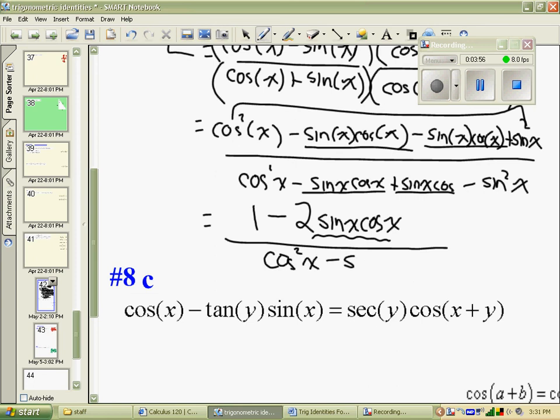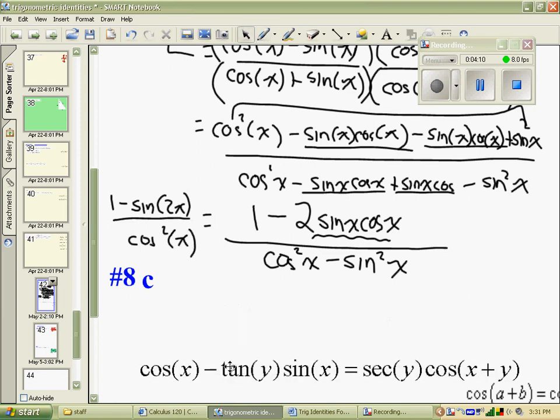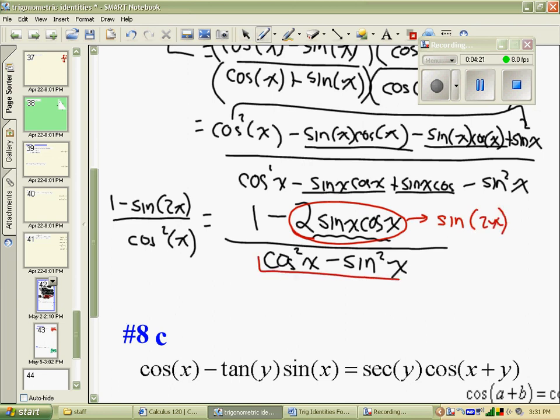And the whole time I'm trying to make this equal 1 minus sin 2x over cos 2x. Well, I'm pretty much there now. 2 sin x cos x is sin 2x. And cos squared x minus sin squared x is cos of twice the angle.